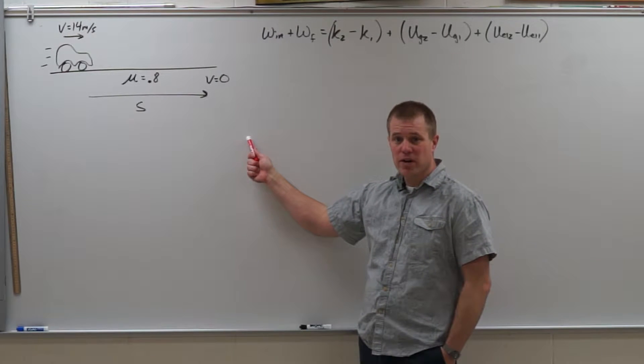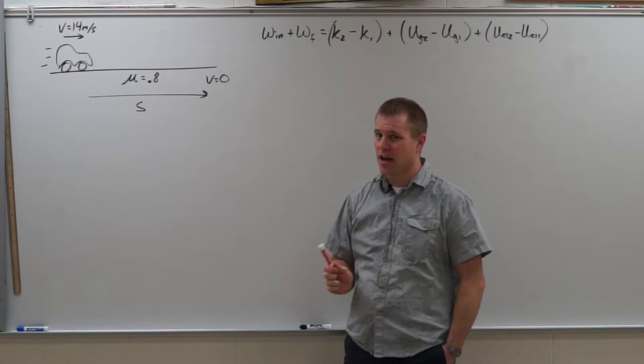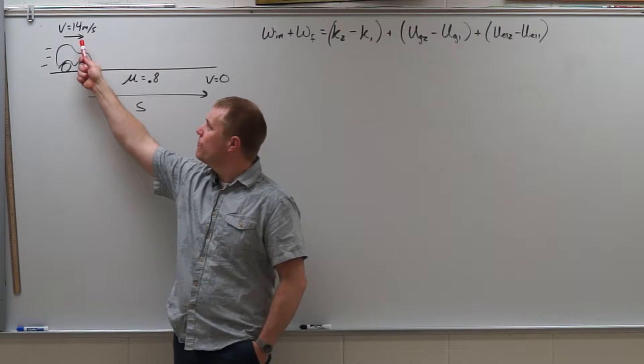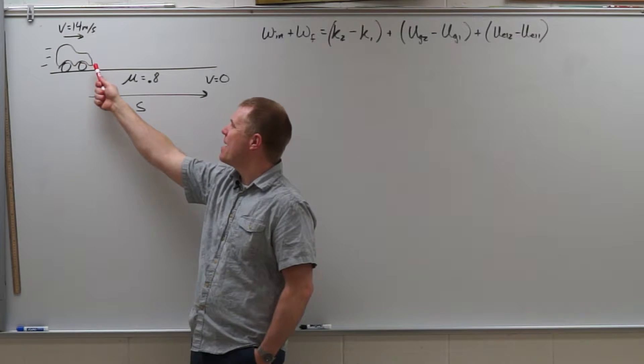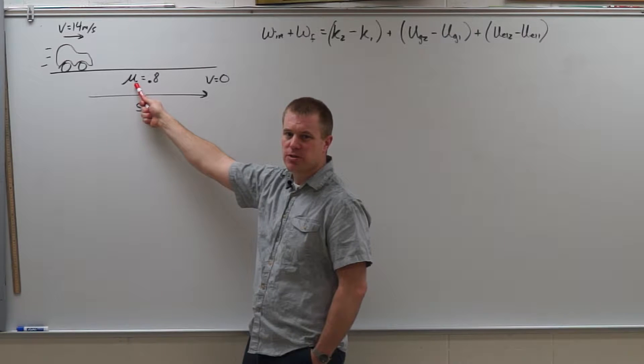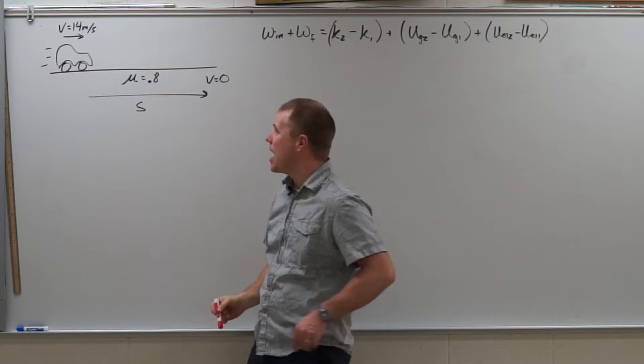Alright, we're going to do another work kinetic energy theorem problem, but this time we are going to have friction, so it's not a conservation of mechanical energy problem. I have a car moving at 14 meters per second. It's going to slam on the brakes and skid to a stop. The coefficient of friction between the tires and the road is 0.8, and I want to figure out how far is it going to skid to a stop.